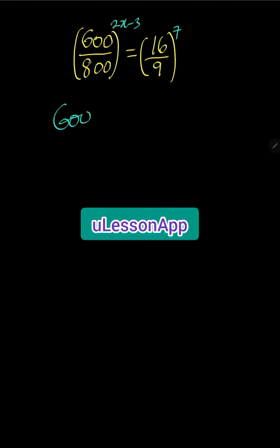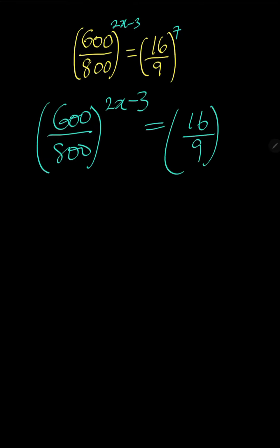So we have 600 all over 800 all to the power of 2x minus 3. Everything is equal to 16 over 9 to the power of 7.